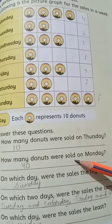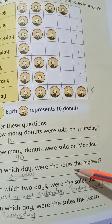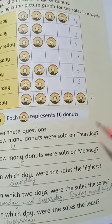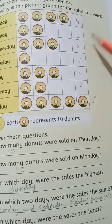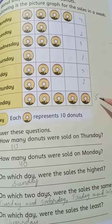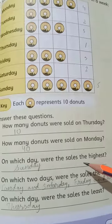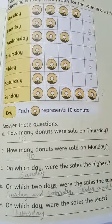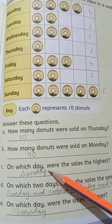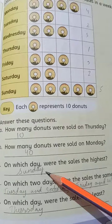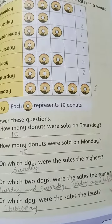On which day were the highest number of donuts sold? The most donuts were sold on the highest day. We will multiply 10 by 5, so the answer is 50. The day asked was the highest day — Sunday is the highest day.